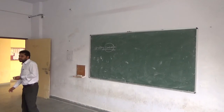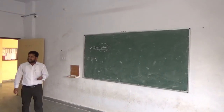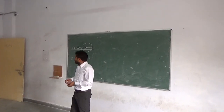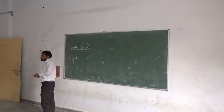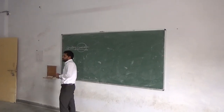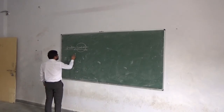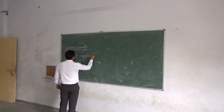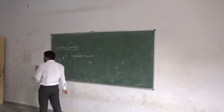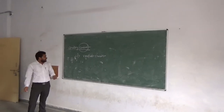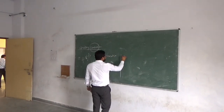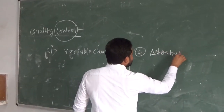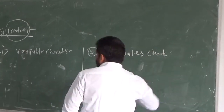In the case of quality control, there are some points — we consider the chart. There are two types of charts in quality control. The first one is variable charts, and the second one is the attributes chart.